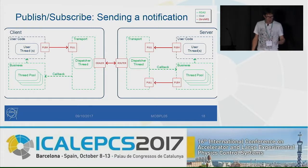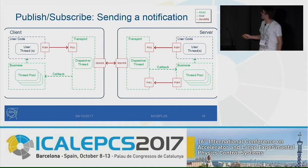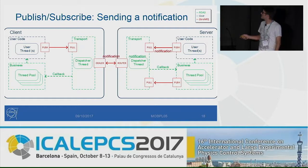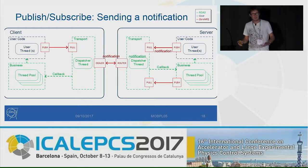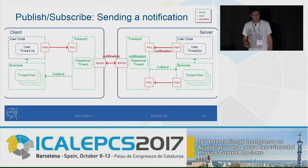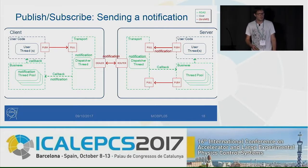For publish-subscribe: to establish a subscription, we use request-reply — the client creates or destroys subscriptions using request-reply. Once the subscription is established, the server sends notifications. Notifications always come from the user threads on the server side. We use the push-pull socket to send them to the transport on the server side, then they go through the dealer-router through the network. We don't have separated channels for publish-subscribe — we just send request-reply and notifications through the same TCP connection. Once received, the dispatcher performs the callback, and at some point one thread picks it up and gives the notification back to the user.